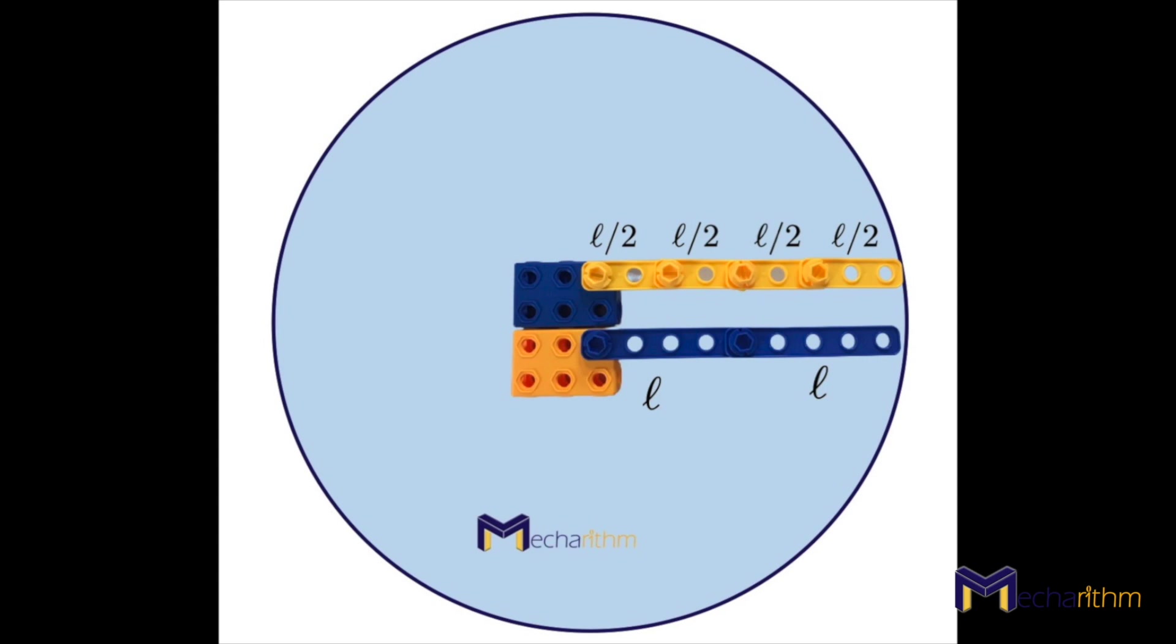Two mechanisms with different C spaces may have the same workspace. For example, a planar 2R open chain robot with link lengths of L has the same workspace as a planar 4R open chain robot with link lengths of L divided by 2. The C space of the 2R robot arm is two-dimensional while the C space of the 4R planar robot is four-dimensional, but they have the same workspace.